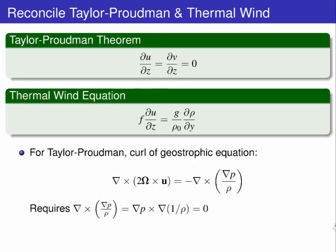Recall the Taylor-Proudman equation comes about by taking the curl of the geostrophic equation through which the right-hand side vanishes because we have assumed that density is uniform. In the thermal wind equation,